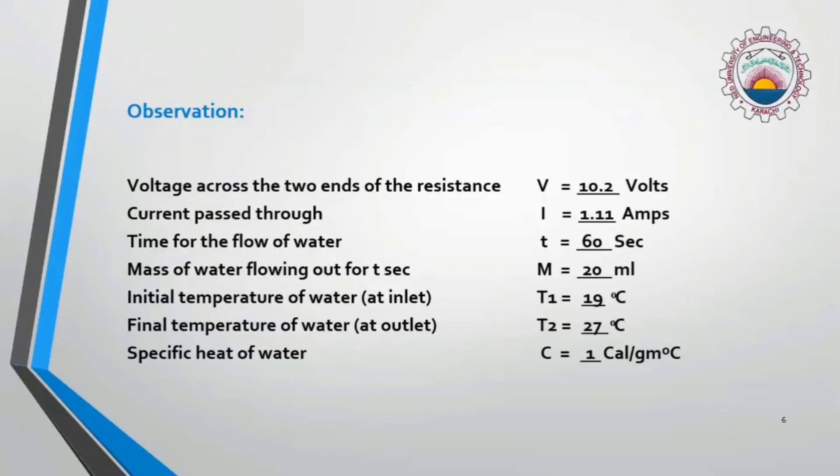Initial temperature of water at the inlet is 19 degrees centigrade T1. And the final temperature of water at outlet, that is T2, is 27 degrees centigrade. And the specific heat of water is 1 calorie per gram into centigrade.